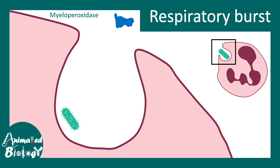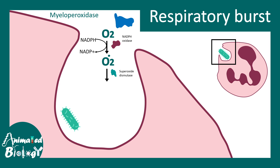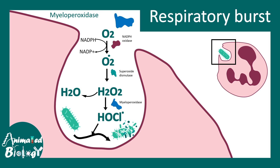One of the most important components is the myeloperoxidase enzyme, which helps in the process called respiratory burst. During respiratory burst, oxygen is converted into superoxide radical by the enzyme NADPH oxidase. Superoxide dismutase then converts it into hydrogen peroxide, which is further converted to HOCl radical with the help of myeloperoxidase. So myeloperoxidase is important for generating reactive oxygen species which kill bacteria.